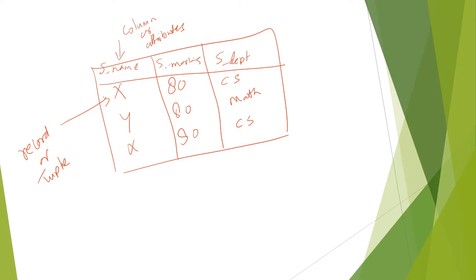Once we store any value in the database, our objective is to uniquely identify that particular student, and that will help us in our business use case. In this example, if I want to bring the student X detail, then I have two records with a similar kind — X, 80, and CS. So I am not able to identify the exact record from this table, and then the whole purpose of the database is gone.